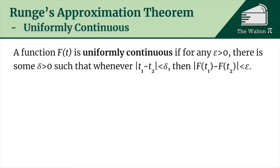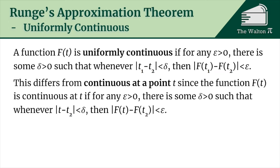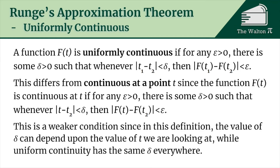Uniform continuity means that for any epsilon greater than zero there is a delta greater than zero such that whenever the distance between t1 and t2 is less than delta, the distance between f(t1) and f(t2) is less than epsilon. This differs from ordinary continuity at a point, where delta is allowed to depend on the specific point t being examined. Uniform continuity requires the same delta to work everywhere — a stronger condition.